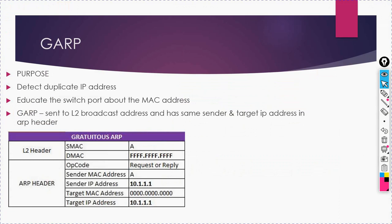GARP is responsible to detect duplicate IP addresses — I will explain how. It will also educate your switch port about MAC addresses. Whatever variation of ARP you are using, it's all about MAC addresses, and this ARP is also responsible to educate your switch port about MAC addresses.